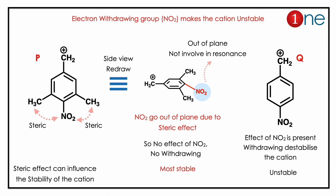To find the stability, you should know the basic fact that an electron-withdrawing group decreases the stability of the cation. In both P and Q, nitro is present, so the position of the nitro group decides the stability.